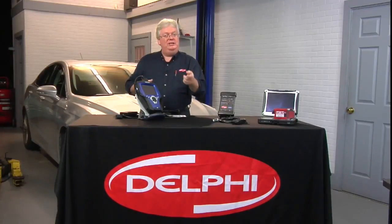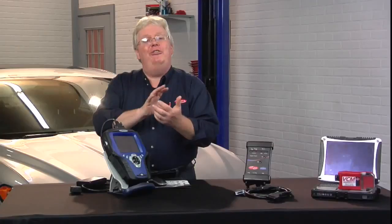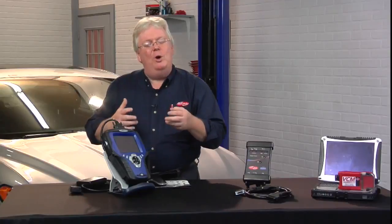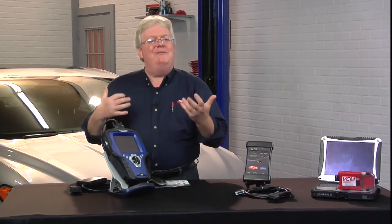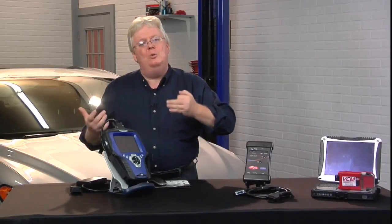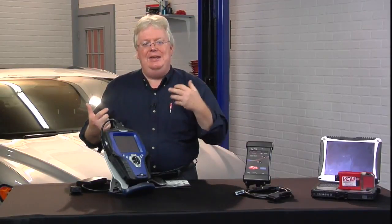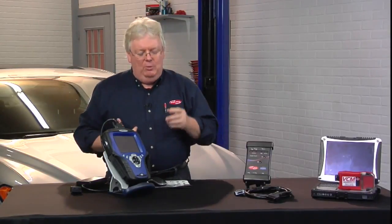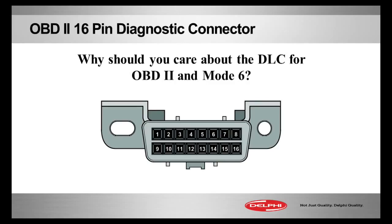Coming up next, we're going to look at websites and resources from your factory OEM internet information provider. But first, we need to know if it's CAN or non-CAN. An easy way to tell: if it's an 2008 or newer, it has the CAN data bus — Control Area Network. It will have terminals in pins 6 and 14, or rather cavities 6 and 14, of the 16-pin J1962 standard OBD2 connector.